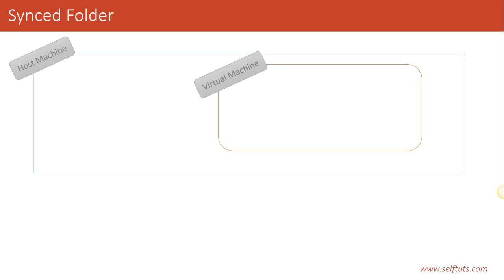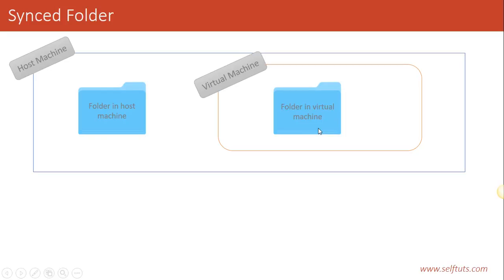In this scenario, the host machine contains the virtual machine, and a single host machine can contain multiple virtual machines. Inside our host machine there is a folder, and there is also a folder inside our virtual machine. What synced folder means is that there is a link between these two folders — the folder in the host machine is linked directly to the folder inside the virtual machine.